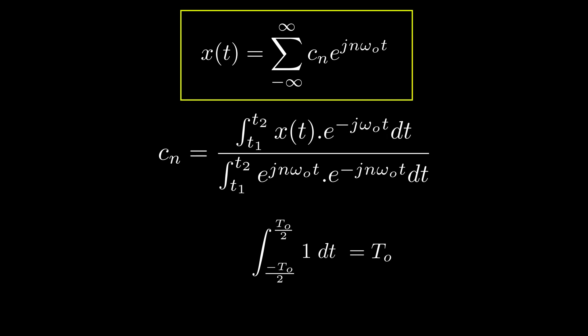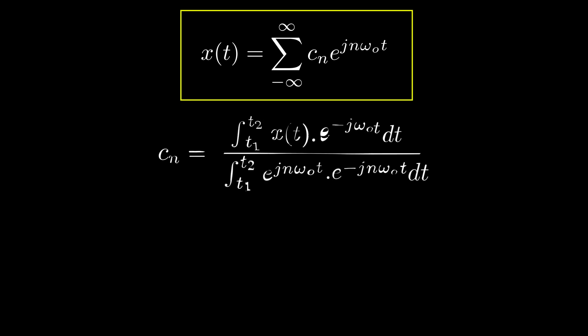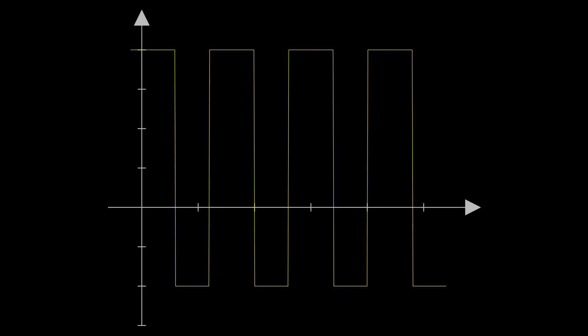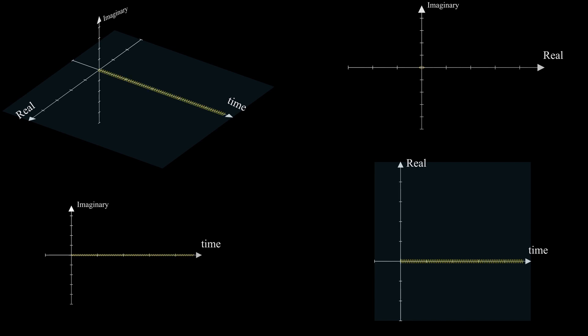This sum is called the Fourier series, and tells us that any periodic signal can be defined as a sum of complex exponential basis signals times complex coefficients. The exponent of each term is an integer multiple of the fundamental frequency, and these integer multiples are called harmonic frequencies. So given an arbitrary periodic signal, this signal can be decomposed into a sum of harmonically related complex exponential components.